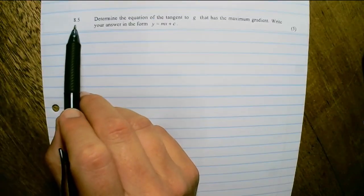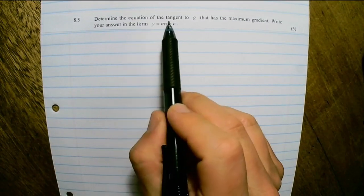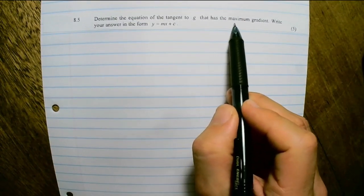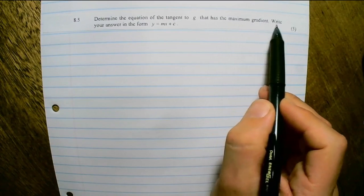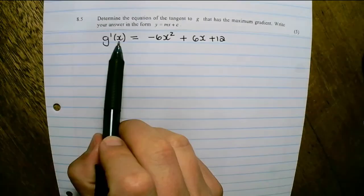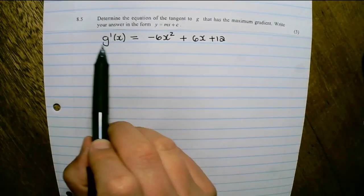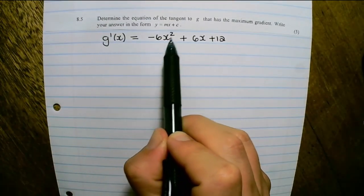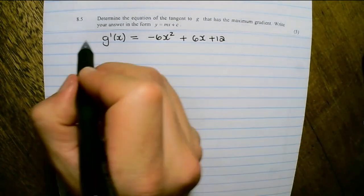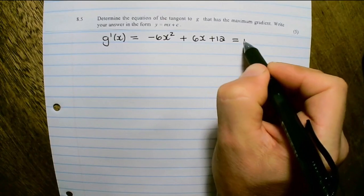8.5, determine the equation of the tangent to g that has the maximum gradient. Write your answer in the form y equals mx plus c. So the first derivative of g(x) was given as negative 6x squared plus 6x plus 12. And this is a formula for gradient.